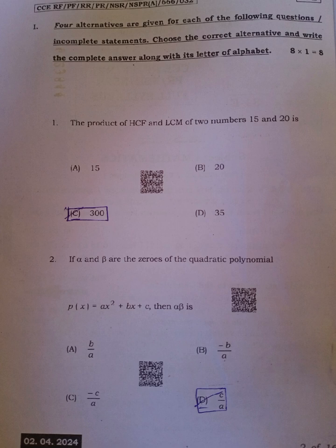Second, if alpha and beta are zeros of the quadratic polynomial P of x equals Ax square plus Bx plus C, then alpha into beta is, so answer is option D, C by A.